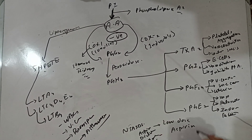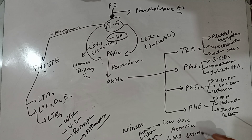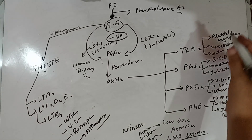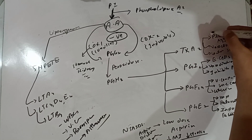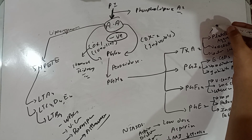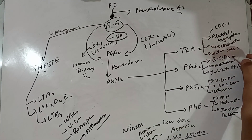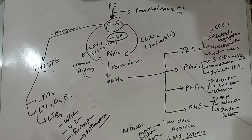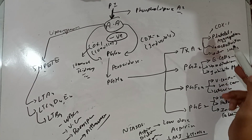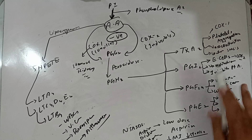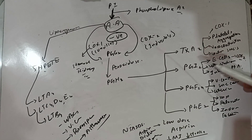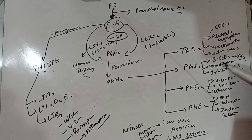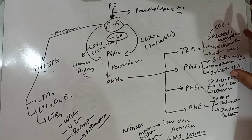Low-dose aspirin prevents the risk of MI and decreases stroke risk. In the platelets, the enzyme working is COX-1, while in the endothelial cell the enzyme working is COX-2. COX-1 in platelets promotes platelet aggregation and vasoconstriction, while COX-2 in endothelial cells forms prostacyclin PGI2 and leads to vasodilation and inhibits platelet aggregation. So COX-1 and COX-2 here work opposite to each other.